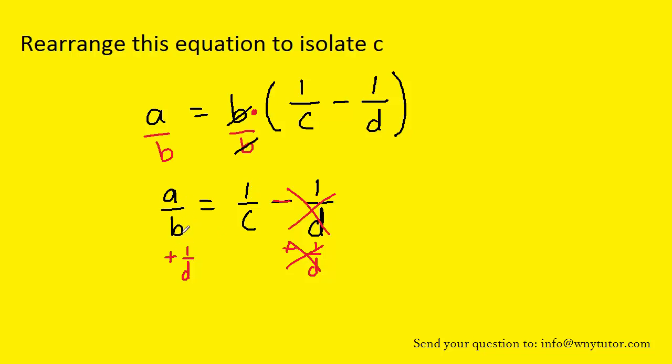These are not like terms, the two fractions here A over B and 1 over D, so we can't really directly add them yet so we'll write it as follows. We'll have A over B plus 1 over D is equal to 1 over C. So far so good, we've almost isolated C. Right now we have 1 over C though.